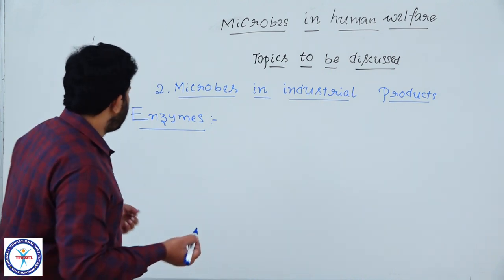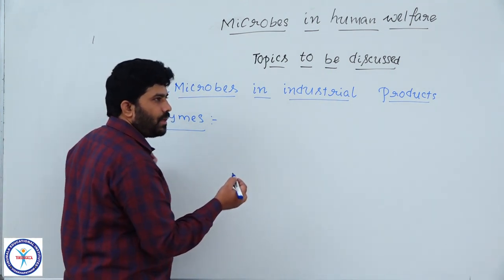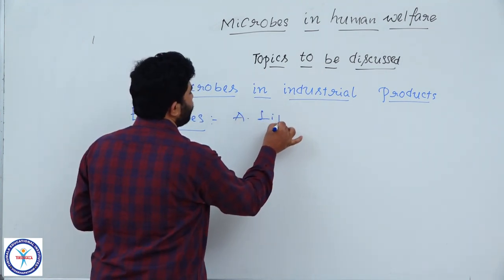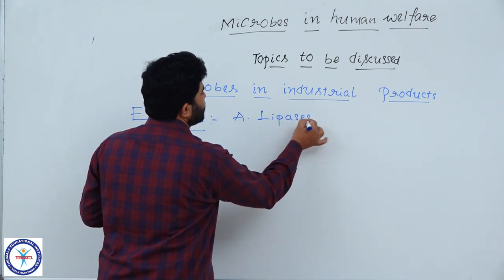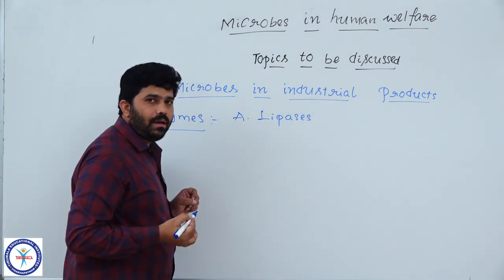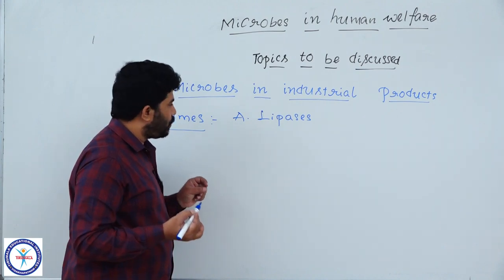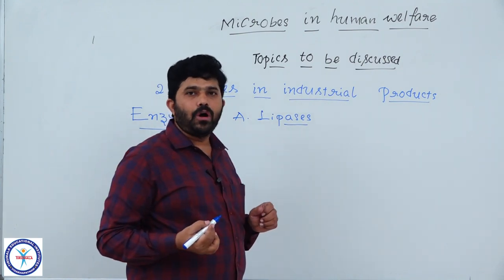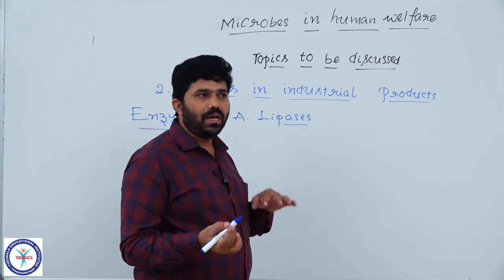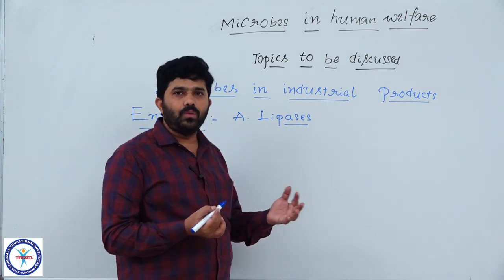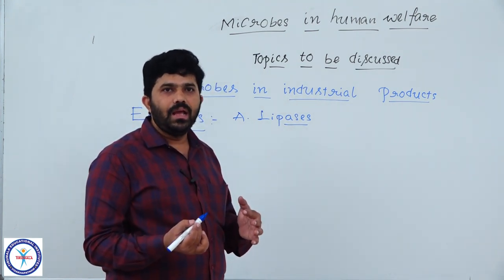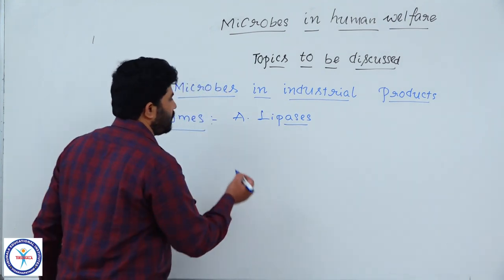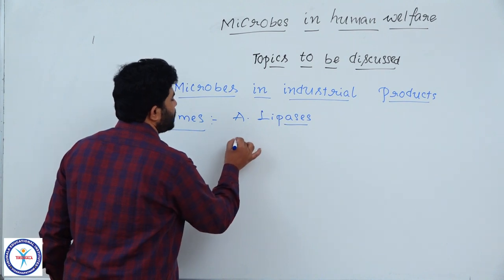The first enzyme is lipases. Lipases are also obtained from microorganisms. They are very much useful for purposes like removal of oil stains from clothes in laundry — simply we use them to remove all oil stains. Lipases are very important and these enzymes are also obtained from microorganisms.